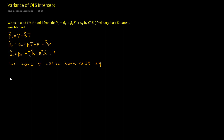Hi to everybody. In this video we are going to talk about the variance of the OLS intercept. In the previous class we estimated beta 0 hat was equal to y bar minus beta 1 hat times x bar.